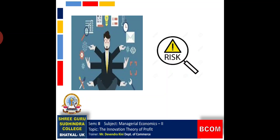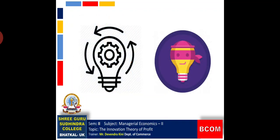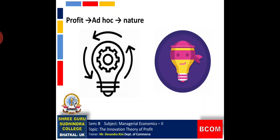Further, Schumpeter says that profit is purely ad hoc in nature. Such a profit arises only until the innovation is duplicated by the competitors. In the absence of such an innovation, an entrepreneur is not able to earn a profit.